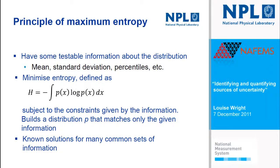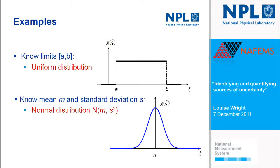There are known solutions that minimise that quantity for common sets of information. For example, if you happen to know only the limits on your value, the best distribution to apply is a uniform distribution — convenient because often all you have are limits or tolerances. If, on the other hand, you know the mean and the standard deviation, your best bet is always the normal distribution, and again that's convenient because it's easy to use.